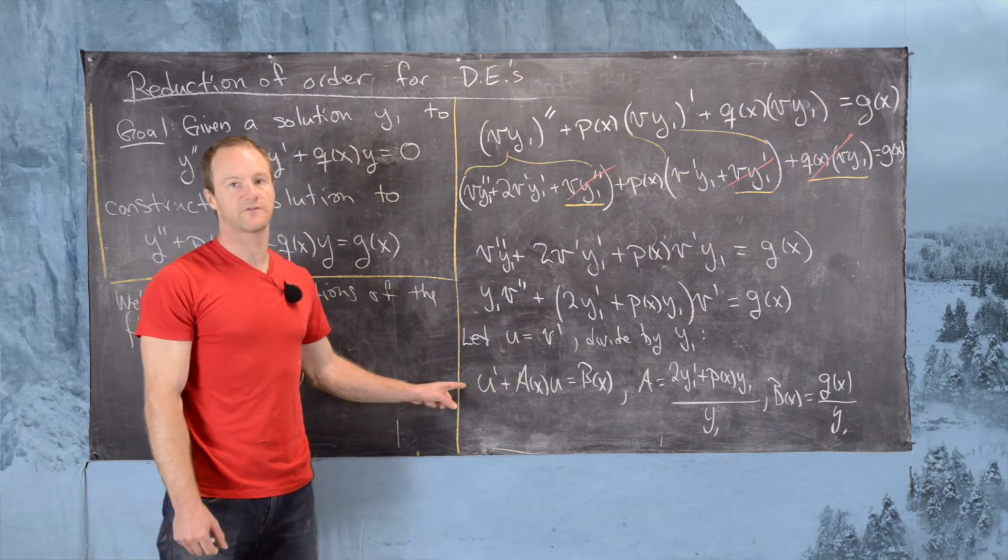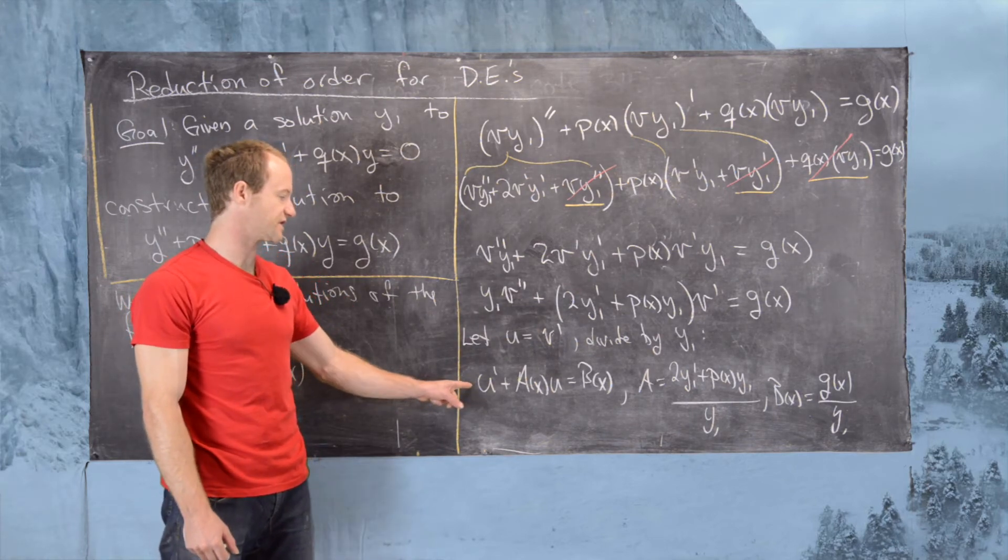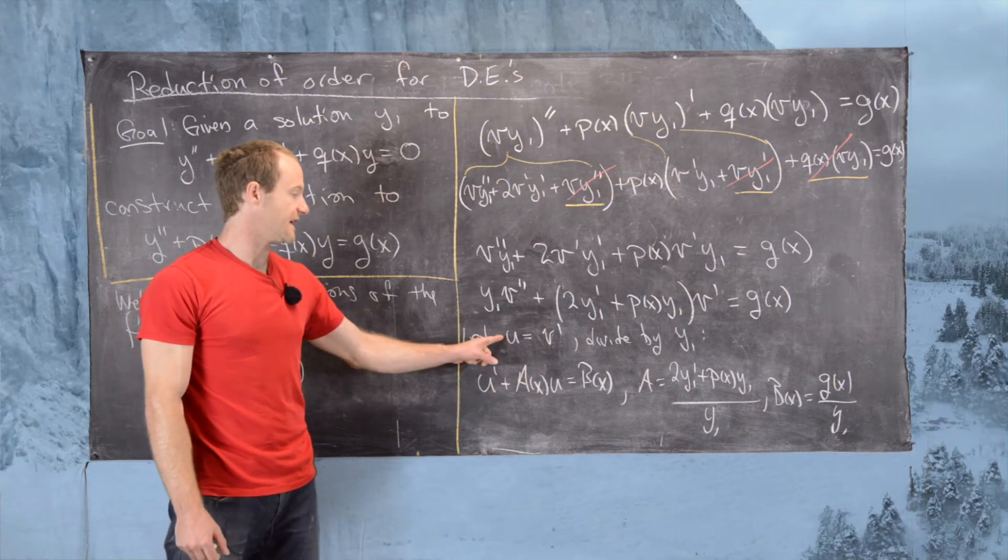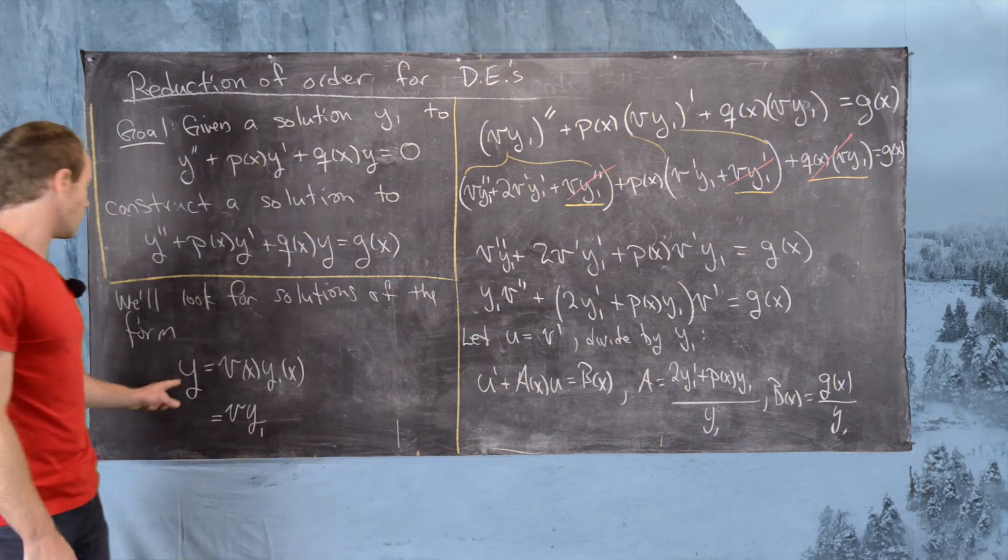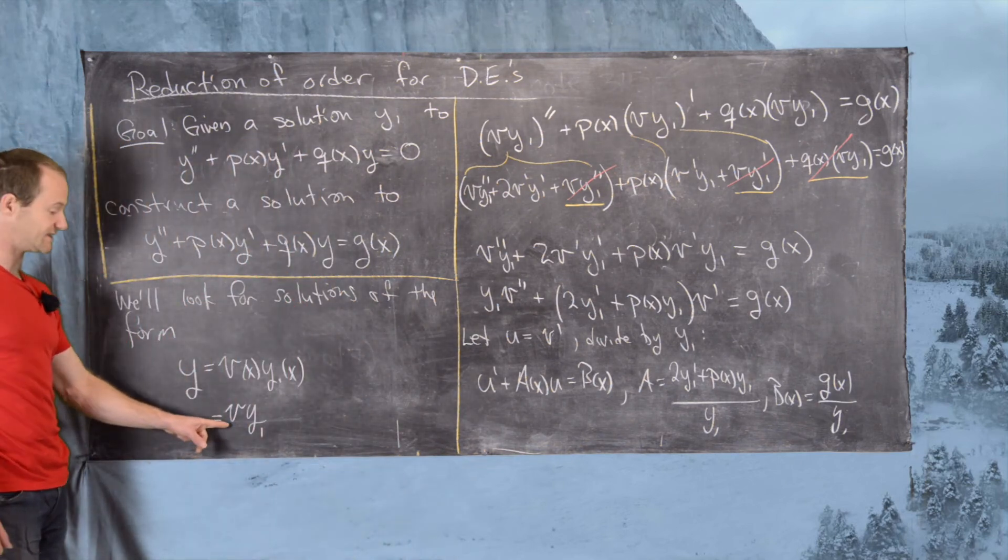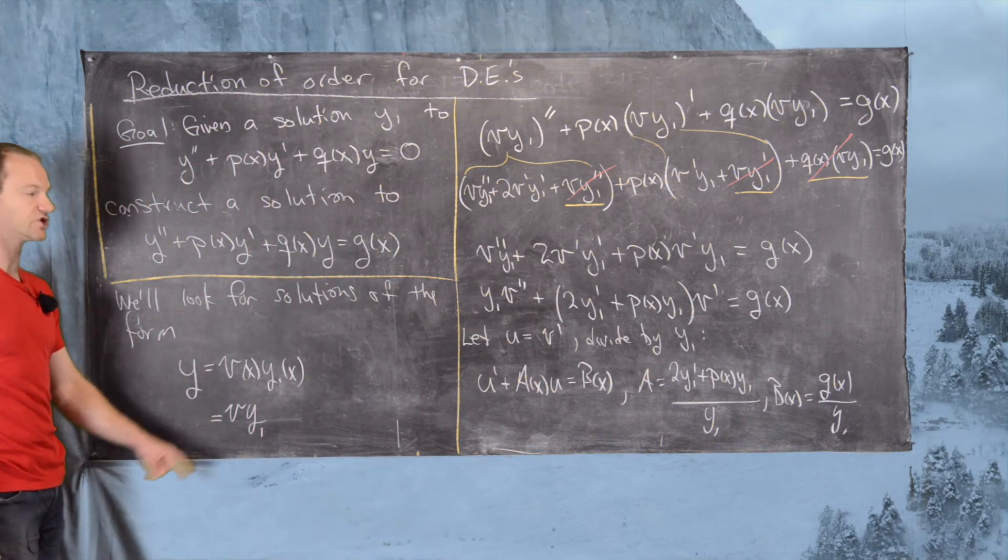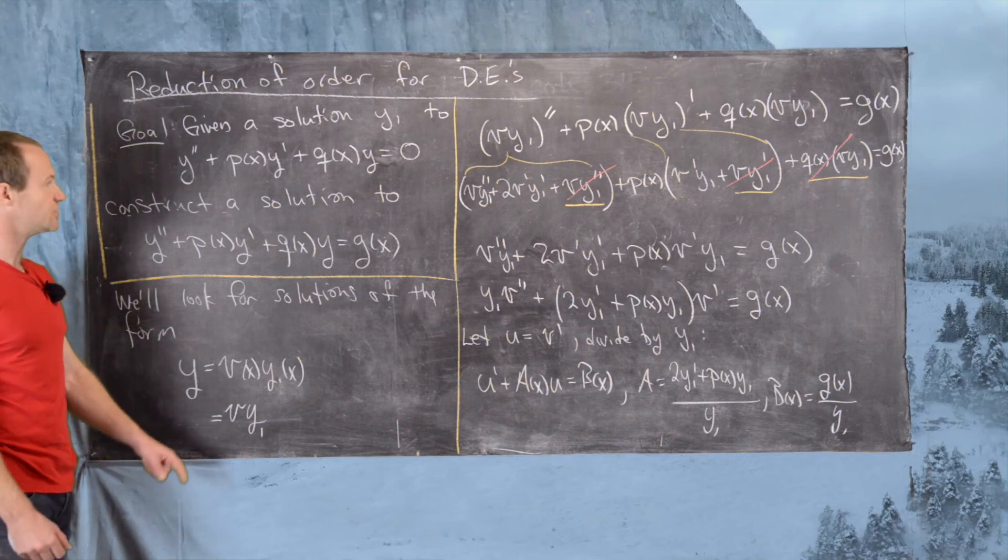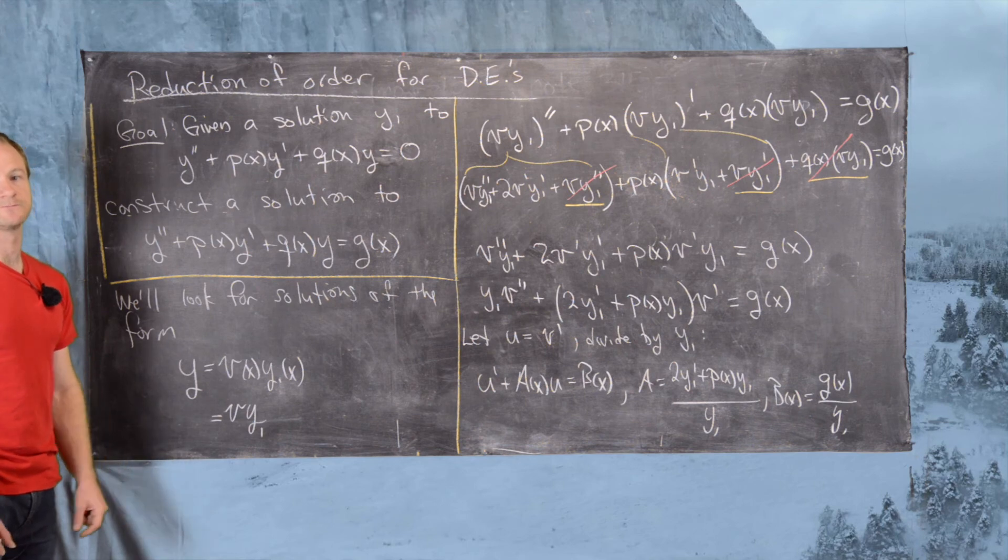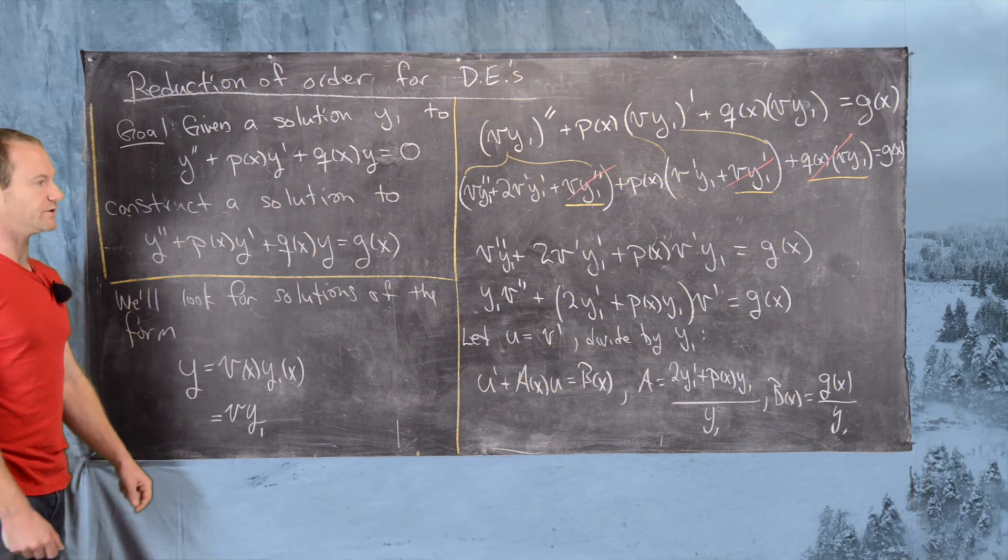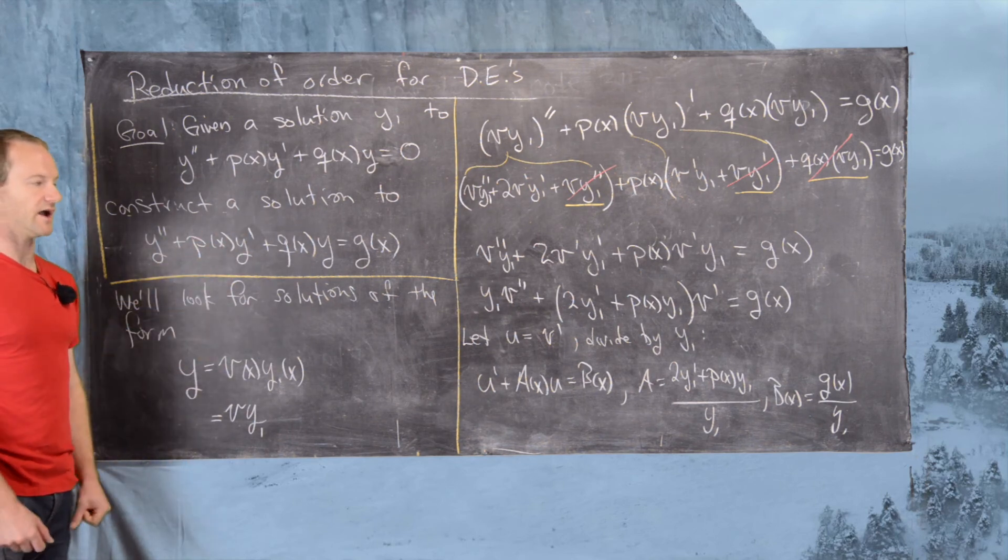Now we can use the method of first order linear differential equations to solve for u, take the antiderivative of that to solve for v, multiply it by y1 because our assumption is that's the form of our general solution, and then we'll have a solution to this goal differential equation. I'll have a video where we do an example of this, but this is the outline of the strategy.